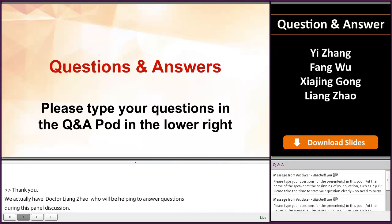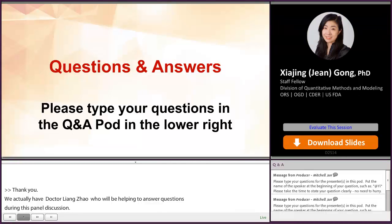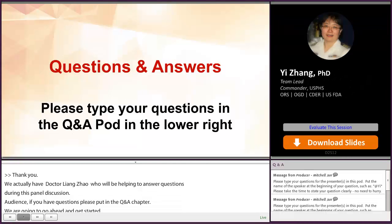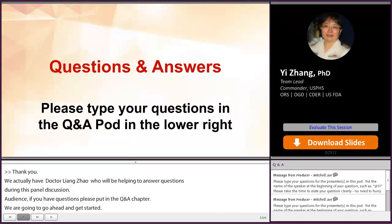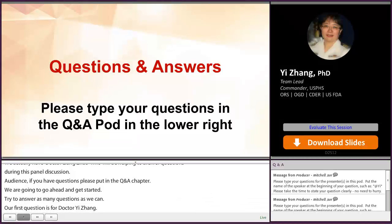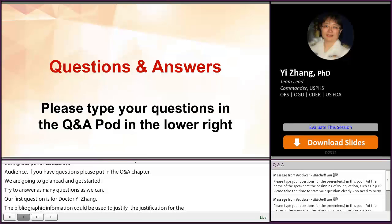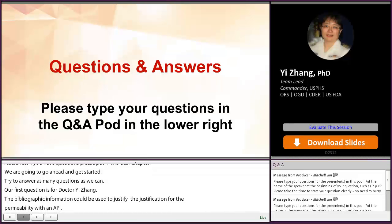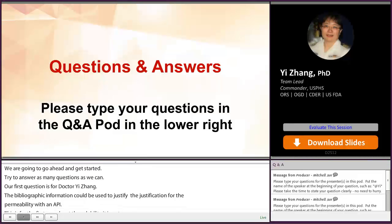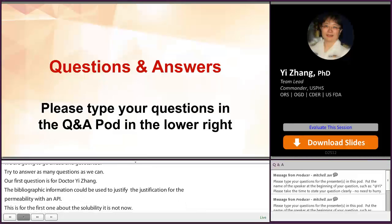Our first question is for Dr. Yi Zhang. Can bibliographic information be used to justify the justification of solubility and or permeability of an API? The short answer to the first one about solubility, the answer is no. You should always conduct your own solubility study to establish the high solubility of the drug substance and submit it as a pivotal data to support your waiver request based on BCS Class III.